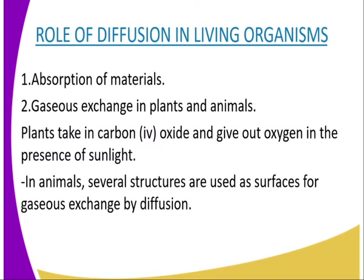In animals, several structures are used as surfaces for gaseous exchange. These surfaces provide a suitable respiratory surface with a large surface area for efficient gaseous exchange. Examples of these structures are the gills, the skin, the tracheal system, and the lungs. Diffusion also facilitates the removal of nitrogenous waste in some freshwater unicellular organisms, for example the amoeba.